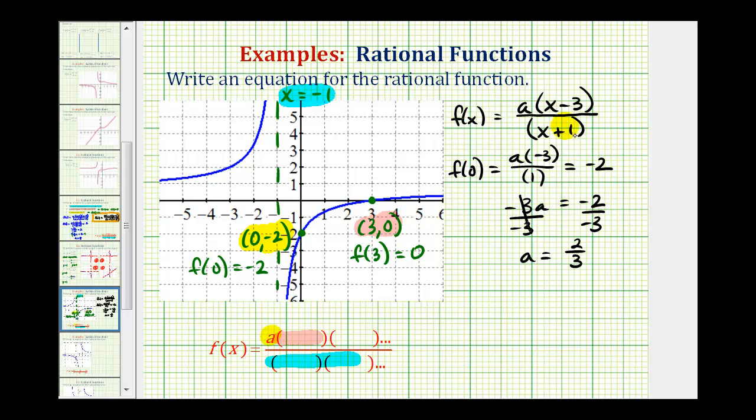Now looking back at this function here, this is the same as a times this fraction. And since a is two-thirds, we can write the function as f(x) equals 2 times (x-3), divided by 3 times (x+1). Notice how we have two-thirds times the fraction, which fits the form that we have here. We really shouldn't leave the fraction of two-thirds in the numerator. We should write it this way.